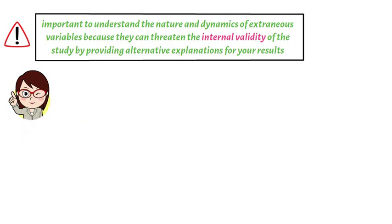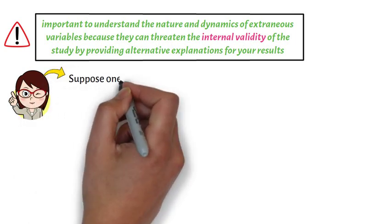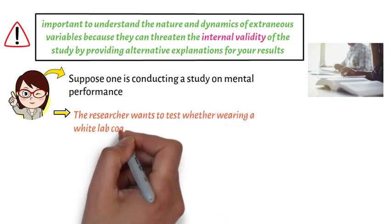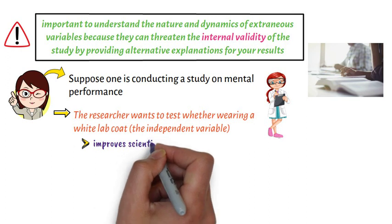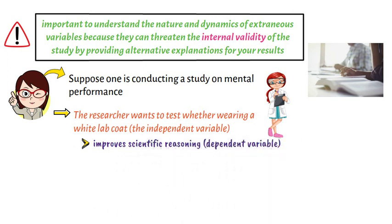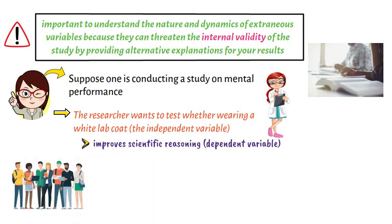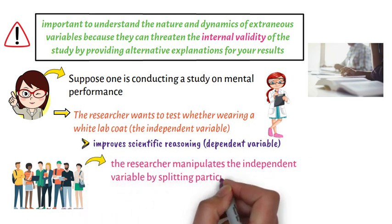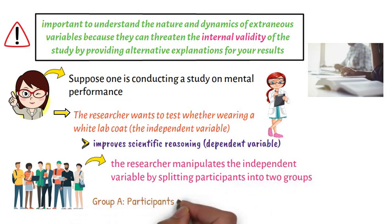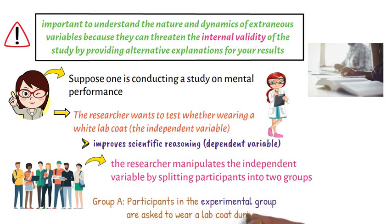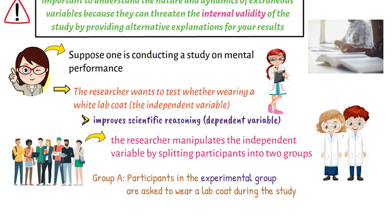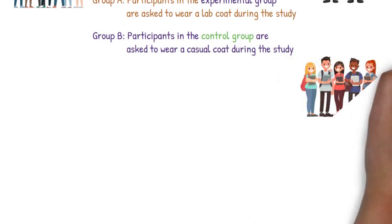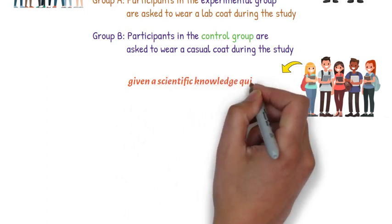Let us consider the example below. Suppose one is conducting a study on mental performance. The researcher wants to test whether wearing a white lab coat, the independent variable, improves scientific reasoning, the dependent variable. The researcher recruits students from a university to participate. Participants are split into two groups: Group A, the experimental group, asked to wear a lab coat during the study, and Group B, the control group, asked to wear a casual coat. All participants are given a scientific knowledge quiz, and their scores are compared between groups.